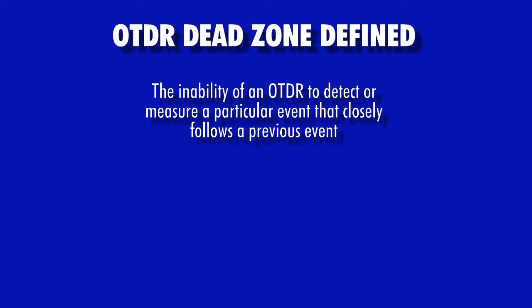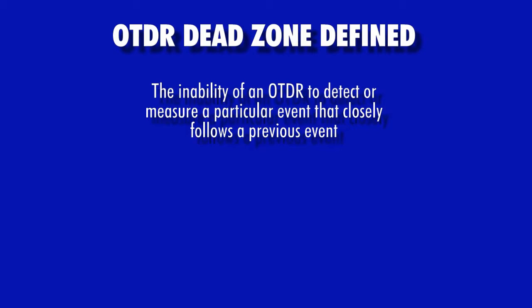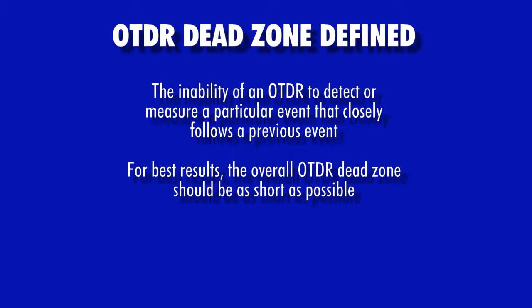In regards to OTDR testing, a dead zone can be loosely defined as the inability of an OTDR to detect or measure a particular event that closely follows a previous event. For best results, it is important to minimize the length of the dead zone as much as possible. The shorter the dead zone, the closer events can be and still be able to tell them apart.